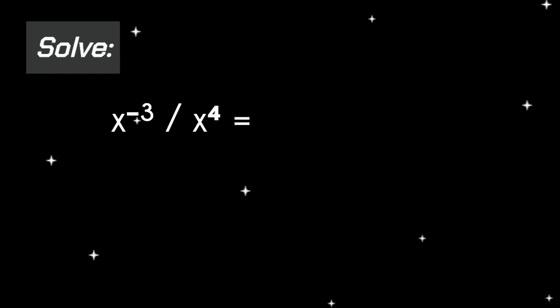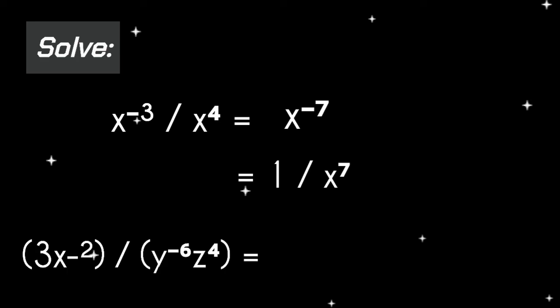Next problem: x raised to the power of negative 3 over x raised to the power of 4. Following the quotient power rule, it would be x raised to the power of negative 3 minus 4, which equals x raised to the power of negative 7. Applying the negative power rule, the final answer is 1 over x raised to the power of 7.